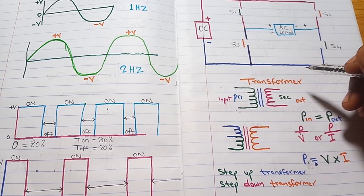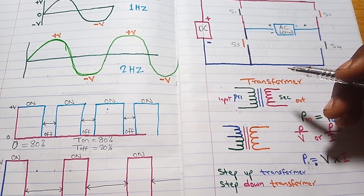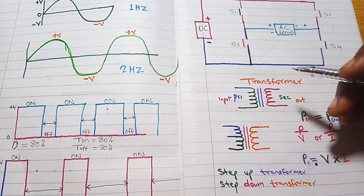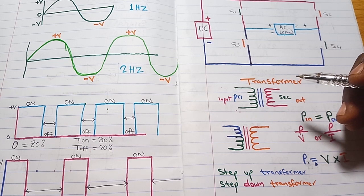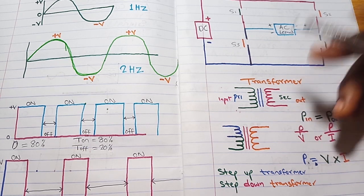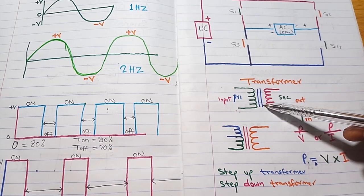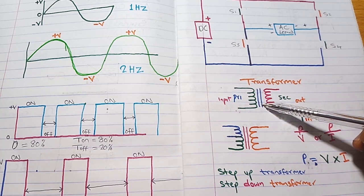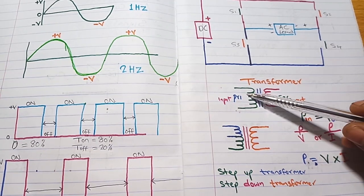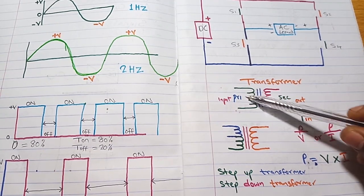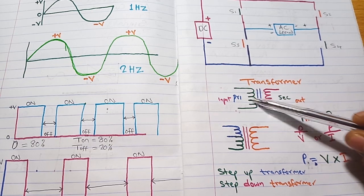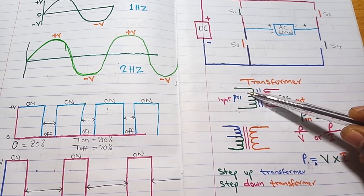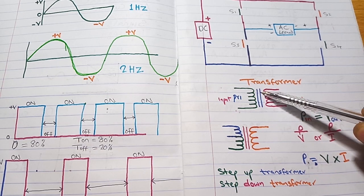Before we do that, let's talk a little about how a transformer behaves and how to do the load calculation. Looking at this diagram, this is a transformer — this is the coil, this is a wire wrapped around, and this is the iron sheet.